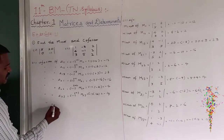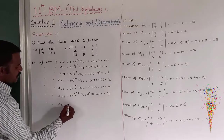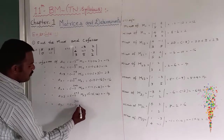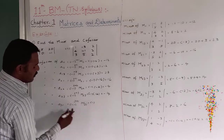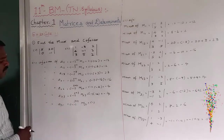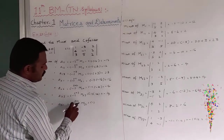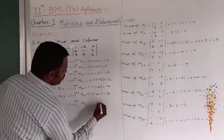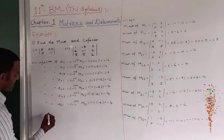Cofactor of a31: minus 1 to the power 3 plus 1, times M31. Because 3 plus 1 is 4, minus 1 to the power 4 is equal to plus 1. M31 is equal to minus 4, so therefore it is equal to minus 4.